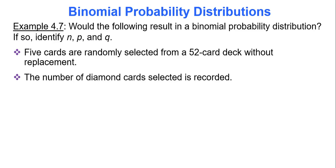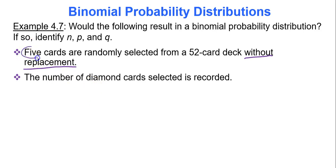What about this experiment: five cards are randomly selected from a 52-card deck without replacement, and the number of diamond cards selected is recorded. We have a fixed number of trials — five cards. Now let's check the second condition: are the trials independent?